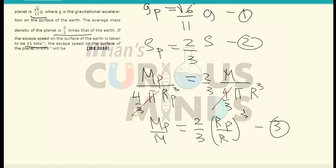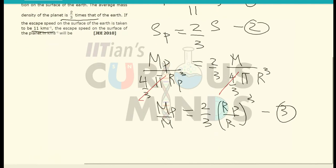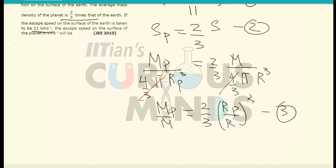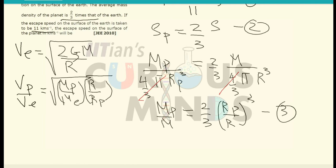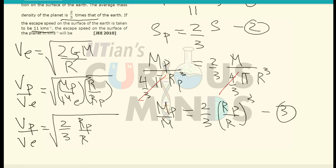Now let us find out the escape velocity. The escape velocity for any planet from its surface is given by the formula v_escape = √(2GM/r). So escape velocity of the planet divided by escape velocity of the earth equals √(mp/me × re/rp), after root 2g cancels out.